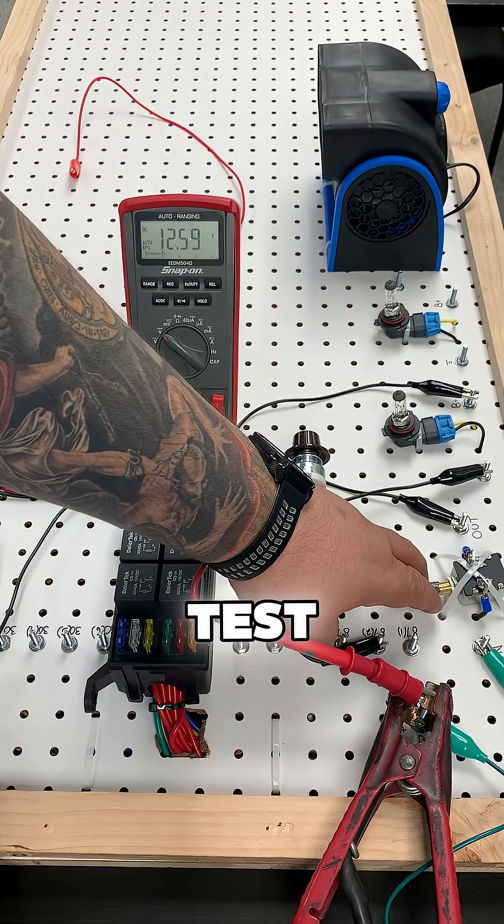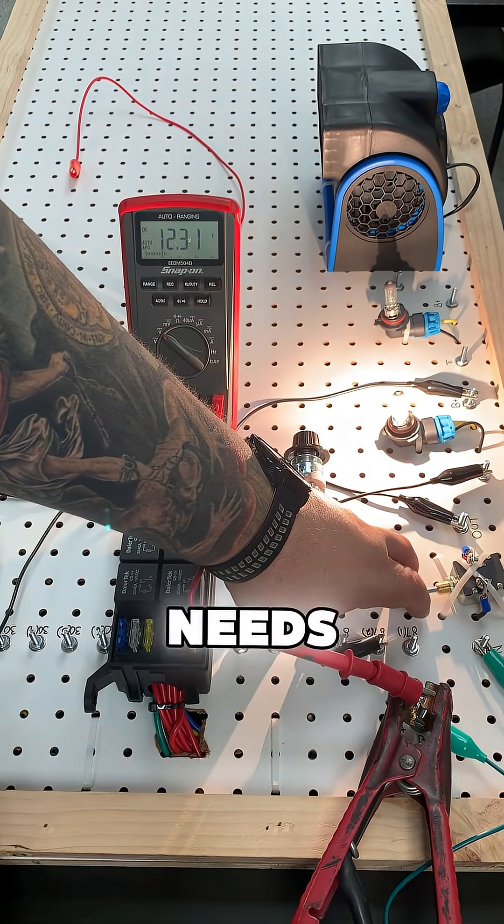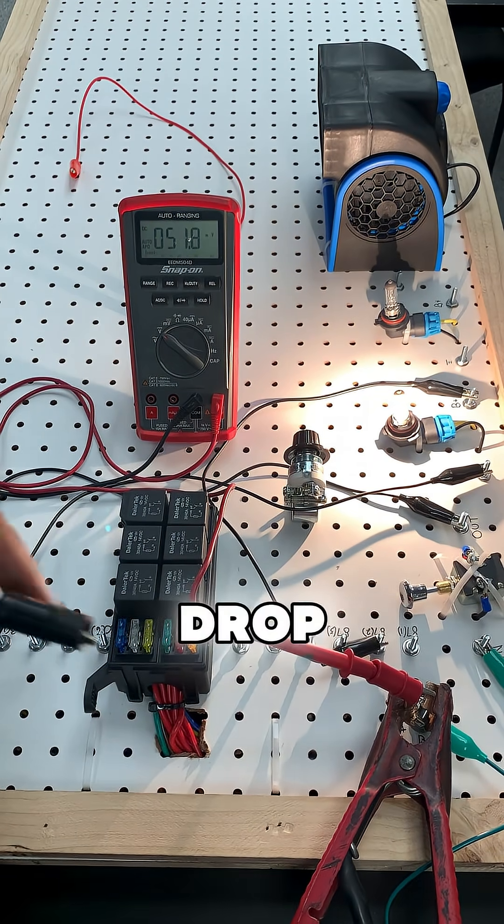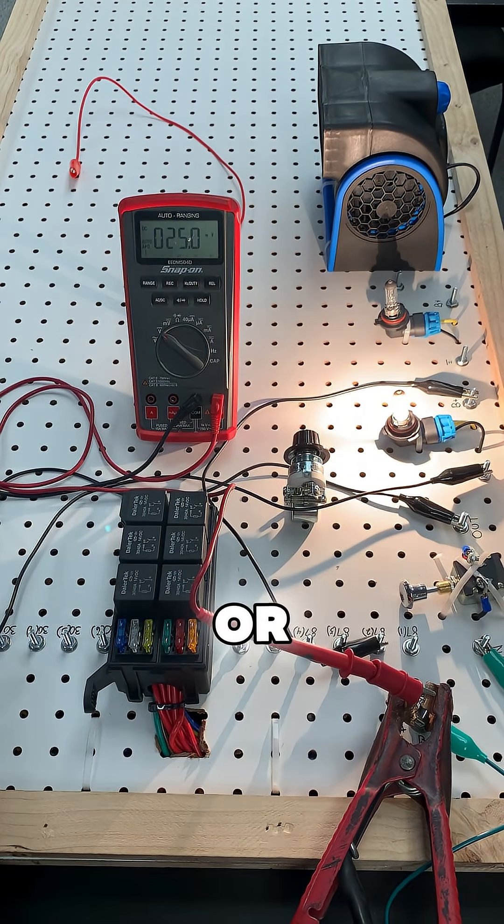Anytime we're testing for voltage drop, the circuit needs to be on. The one thing to always remember when doing a voltage drop test is positive to positive or negative to negative.